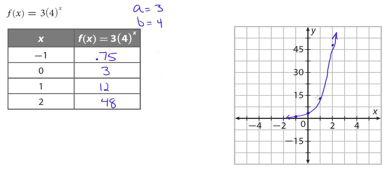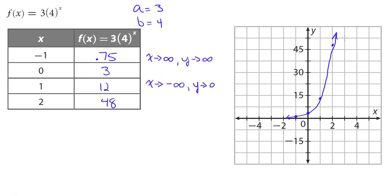Describing the behavior: on the right end, as x values increase, y values also increase forever, so as x approaches positive infinity, y approaches positive infinity. On the left end, as x values decrease forever, the curve gets close to the x-axis. So as x approaches negative infinity, y approaches 0.